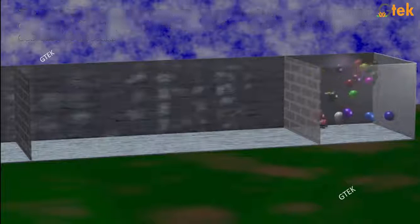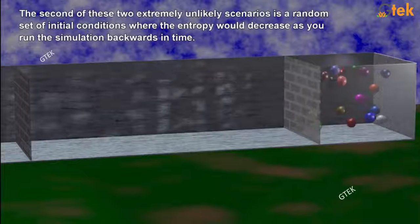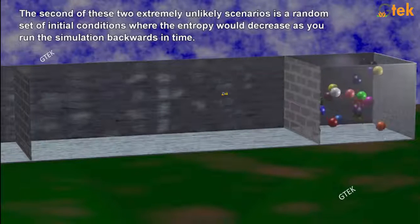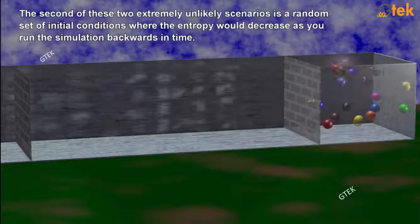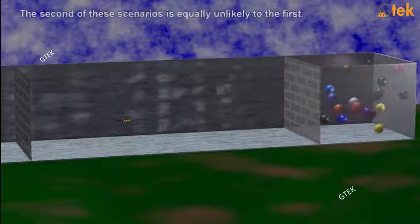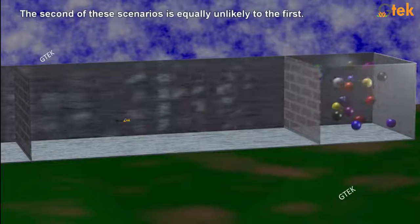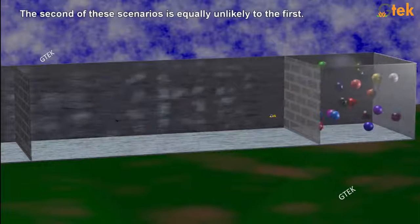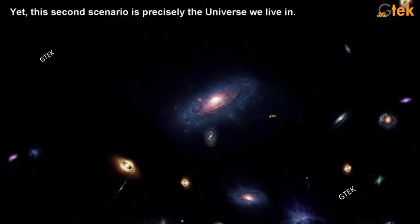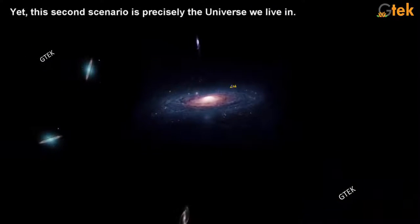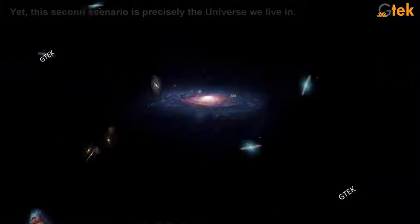If you run the simulation forward, the entropy will decrease as a result. The second of these two extremely unlikely scenarios is a random set of initial conditions where the entropy would decrease as you run the simulation backward in time. The second of these scenarios is equally unlikely to the first. Yes, the second scenario is precisely the universe we're living in.